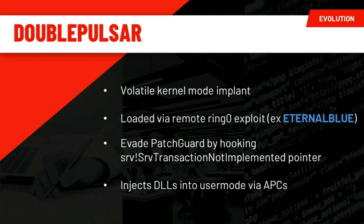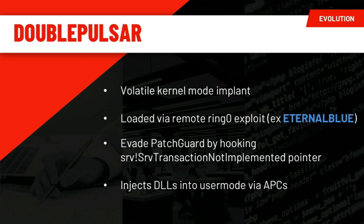Double Pulsar is also worth a strong mention — it's a lightweight kernel mode implant that lives only in memory with no reboot persistence. It's typically loaded onto a system using a remote ring-zero exploit such as EternalBlue. Double Pulsar allows attackers to get stealthy remote access and do network communications by hooking a function pointer in the SMB v1 driver. At the time, PatchGuard wasn't checking that function pointer, so it evaded detection. It became widespread after the code was leaked and was used by other adversaries, for example in the WannaCry attacks.